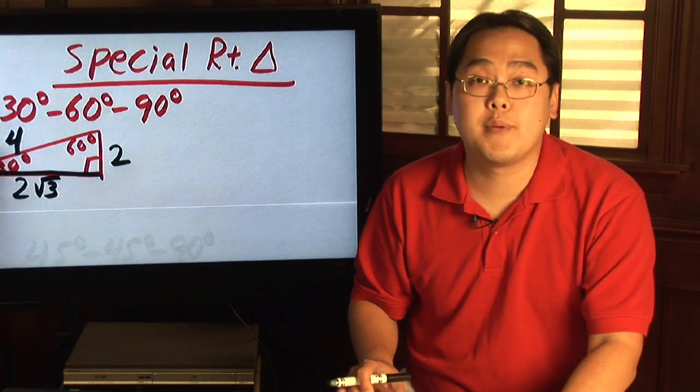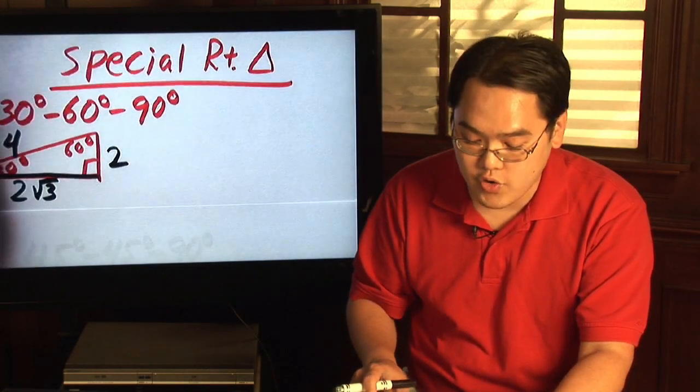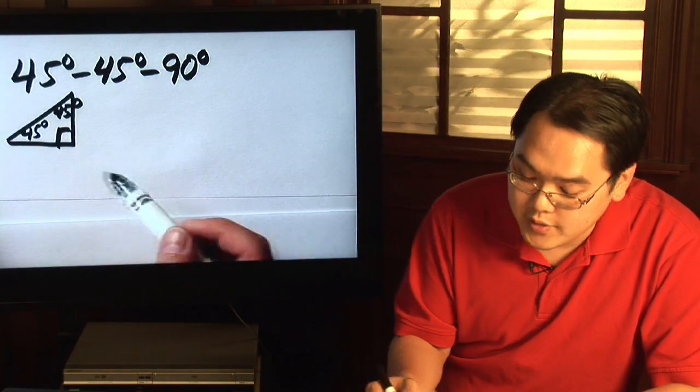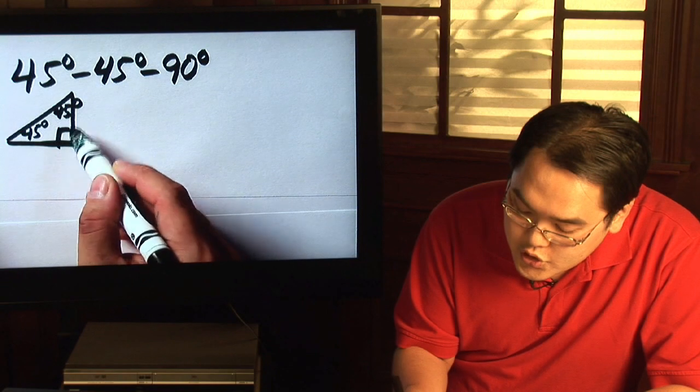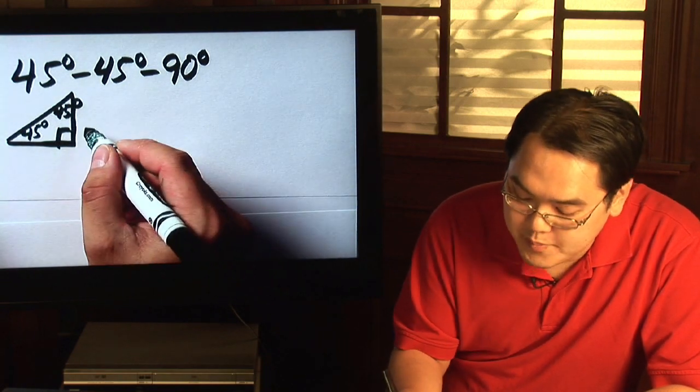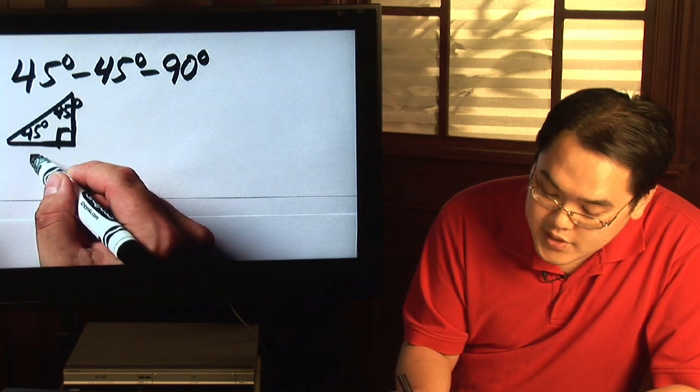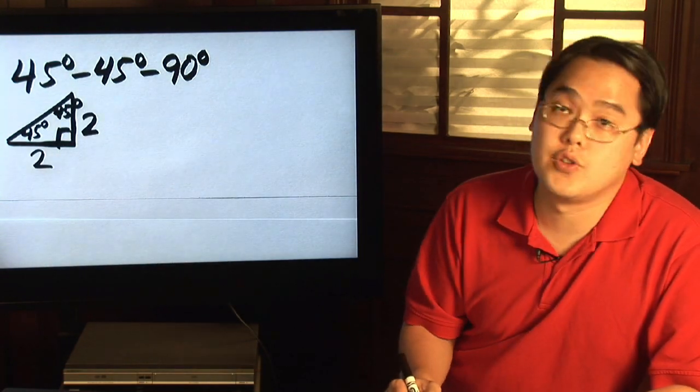Now, here's what happens in a 45-45-90 triangle. In a 45-45-90 triangle, the two legs, the two sides that are supporting the right angle, are equal. So that means if this leg is two, then this leg is also two.